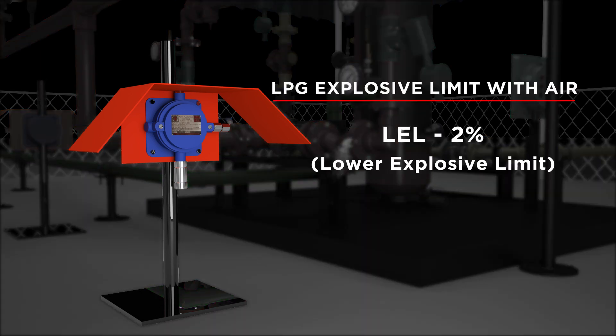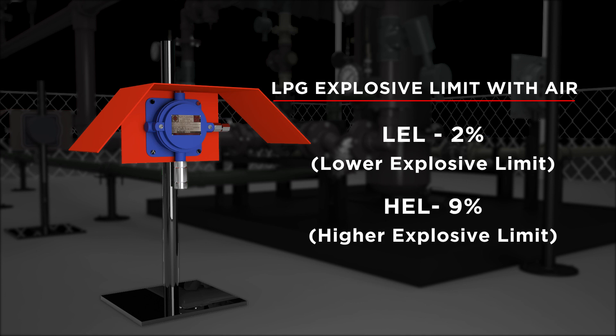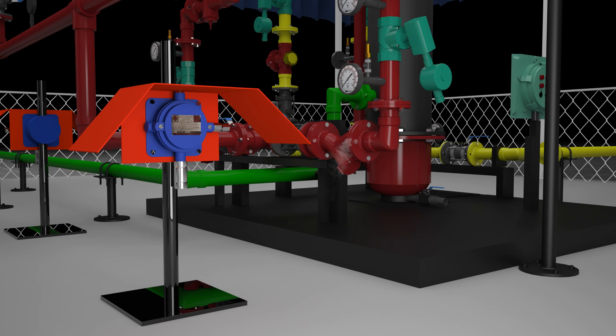For LPG, the lower explosive limit is 2% and the higher explosive limit is 9% in ratio with air. Sensors are configured to alert the users at 20% and 40% of the lower explosive limit before forming an explosive mixture.